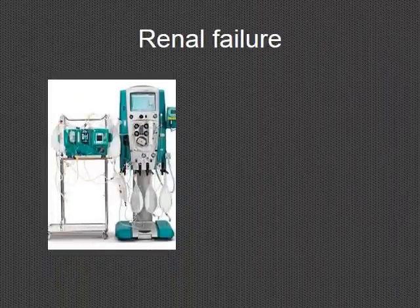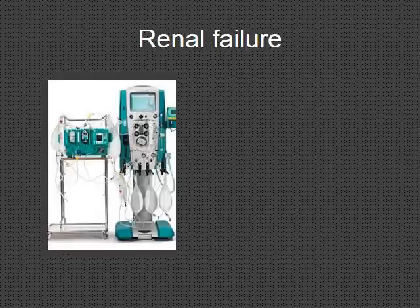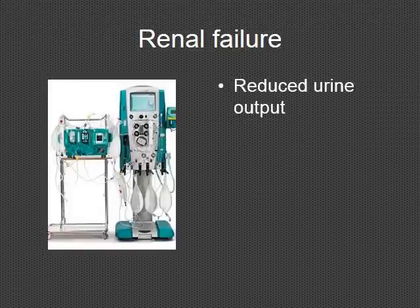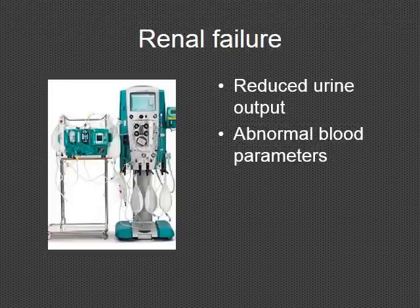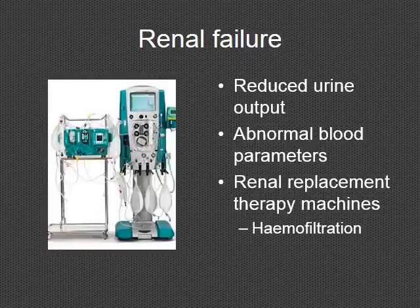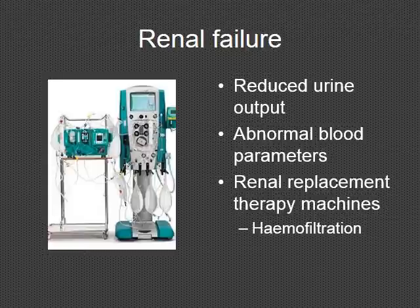Renal failure, also known as kidney failure, is the inability of the kidneys to excrete waste and maintain electrolyte balance. Reduced urine output — oliguria or anuria — is commonly used as a diagnostic indicator. Urine tests can show abnormal levels of protein and glucose, and blood markers such as urea, creatinine and dissolved salts help determine kidney function. An increase in these blood markers indicates renal failure. By using renal replacement therapy such as haemofiltration, the kidney's function is taken over by a machine, which removes blood from a large vein, filters it, and returns it to the patient.